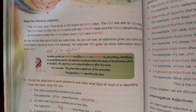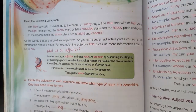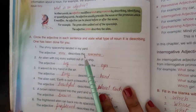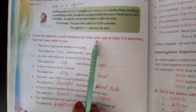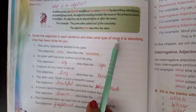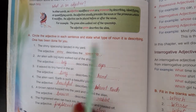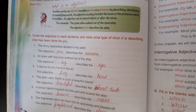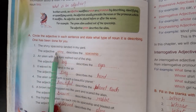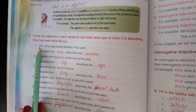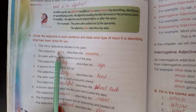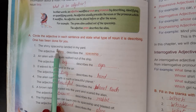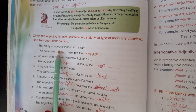So in this, 'tiny' is the adjective. Let's discuss Exercise 1. Circle the adjective in each sentence and state what type of noun it is describing. One has been done for you. Aapko statement given aayegi — ismein aapne batana hai ki adjective kaun sa hai aur wo kaun se noun ko specify kar raha hai.